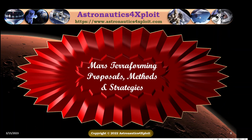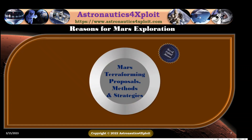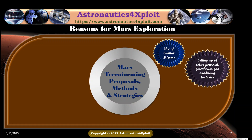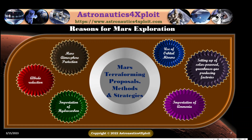Mars terraforming purposes, methods, and strategies. There are various purposes, methods, and strategies that are mapped out for Mars terraforming. The purposes and methods include use of orbital mirrors, setting up of solar-powered greenhouse gas-producing factories, importation of ammonia, importation of hydrocarbon, albedo reduction, and mass atmosphere protection. Each of these is explained as follows.